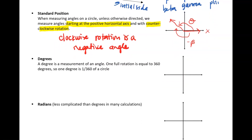Degrees. A degree is a measurement of an angle. A circle — one full rotation — is equal to 360 degrees. So one degree is 1 over 360 of a circle. If we're talking about starting here and going all the way around, that's 360 degrees. Now most students love degrees, but in this unit you're really going to deal with radians a whole lot more, so don't get too comfortable with degrees. That's just the nature of trig.